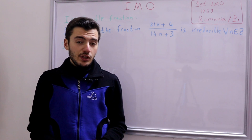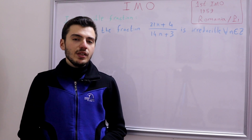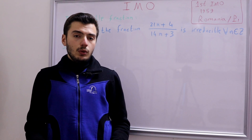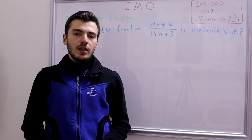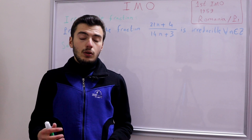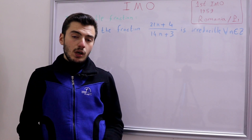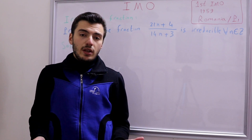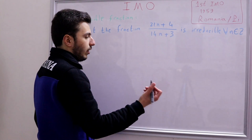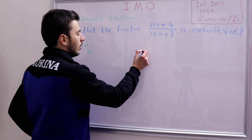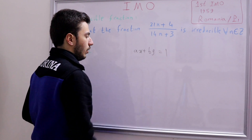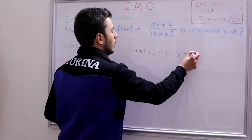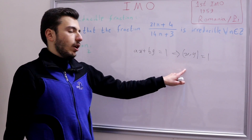Because the problem is simple, let's solve it another way — Solution 2 — using a theorem called Bezout's theorem. This theorem states that to prove the GCD of two numbers x and y is 1, you just need to find two integers a and b such that ax + by = 1. If such a and b exist, then the GCD of x and y is 1.